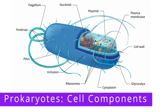Next, you will see ribosomes, which are structures within the cell that are responsible for protein synthesis. They are composed of protein and specialized ribosomal RNAs. Prokaryotic ribosomes are 70S ribosomes, and each ribosome is composed of a small 30S subunit and a large 50S subunit. It's important to note that this is different from eukaryotic cells, which contain 80S ribosomes.